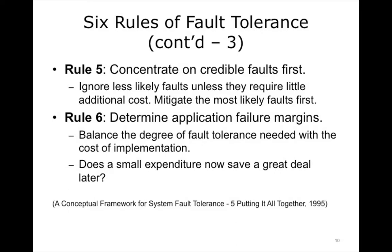Rule number six: carefully determine application failure margins and use the information to balance the degree of fault tolerance needed with the cost of implementation. This rule introduces the idea of costs versus benefits. Cost-benefit analysis looks at weighing costs — one-time, ongoing, and indirect — with benefits such as savings, greater revenue, higher satisfaction, and better patient outcome. A less formalized version may help decide margins. For instance, a spare PC monitor in storage may cost $150 initially, but save money if a room can be brought back up quickly for patients.